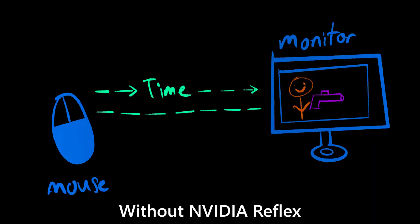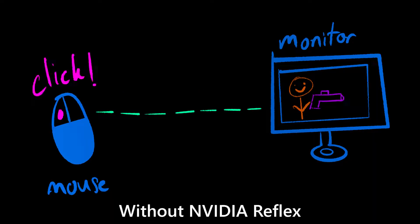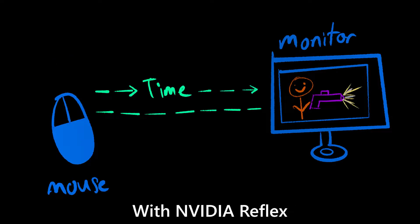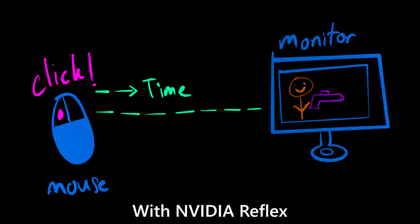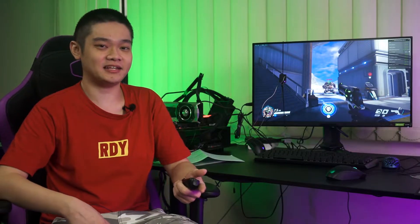Secondly, what does Nvidia Reflex do? It does two things. The first one is obvious — it can shorten the time taken for your input signal from the mouse to show up on the screen, though there are a lot of prerequisites involved which we will talk about later. Secondly is the ability to measure the latency.